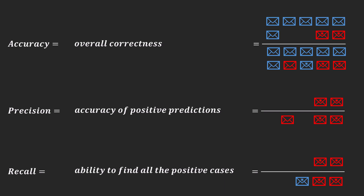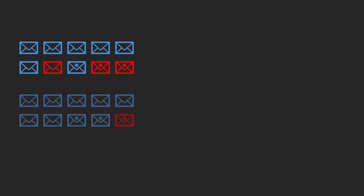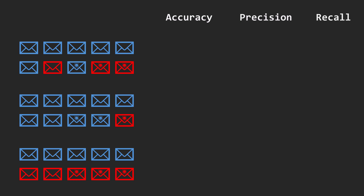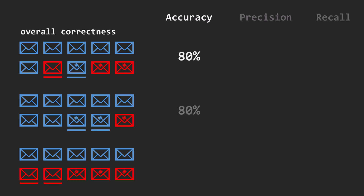Why it's often worth using these metrics together when analyzing model performance is best explained with an example. Suppose we trained 3 models on our dataset. Each model made 2 mistakes, so accuracy is 80% for every model.